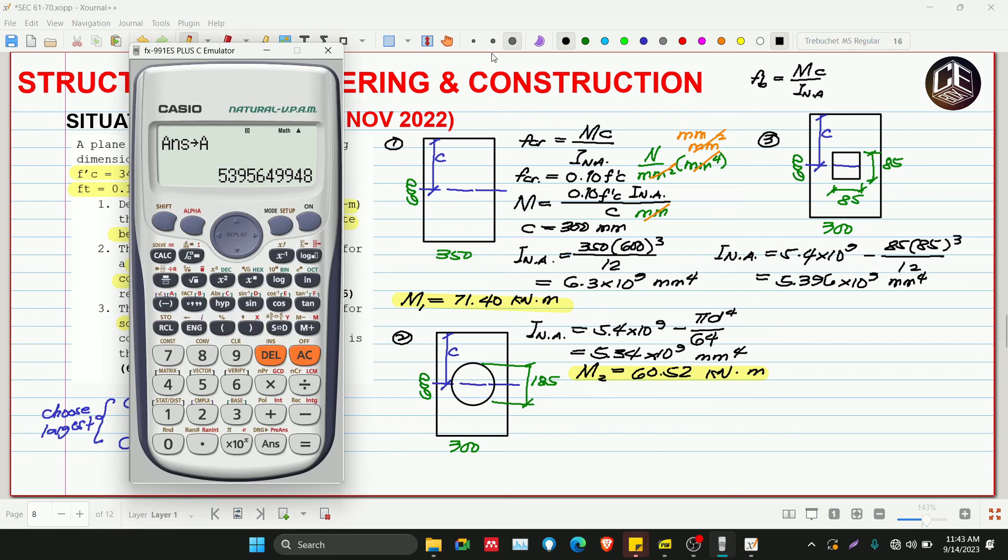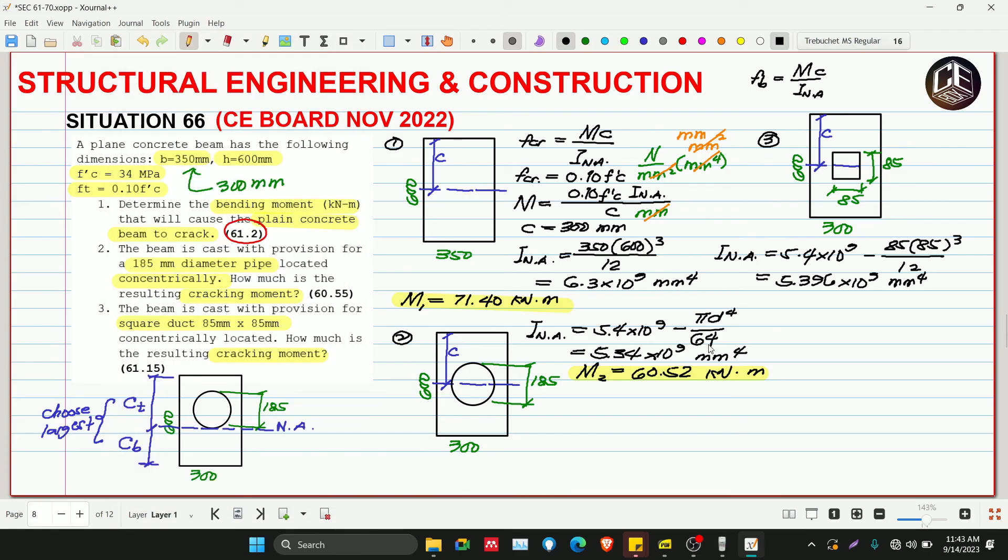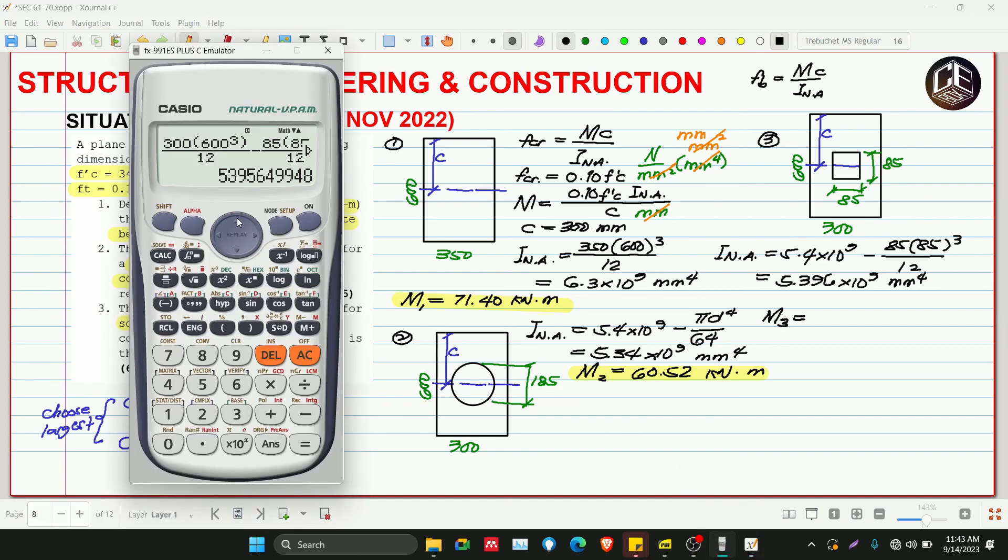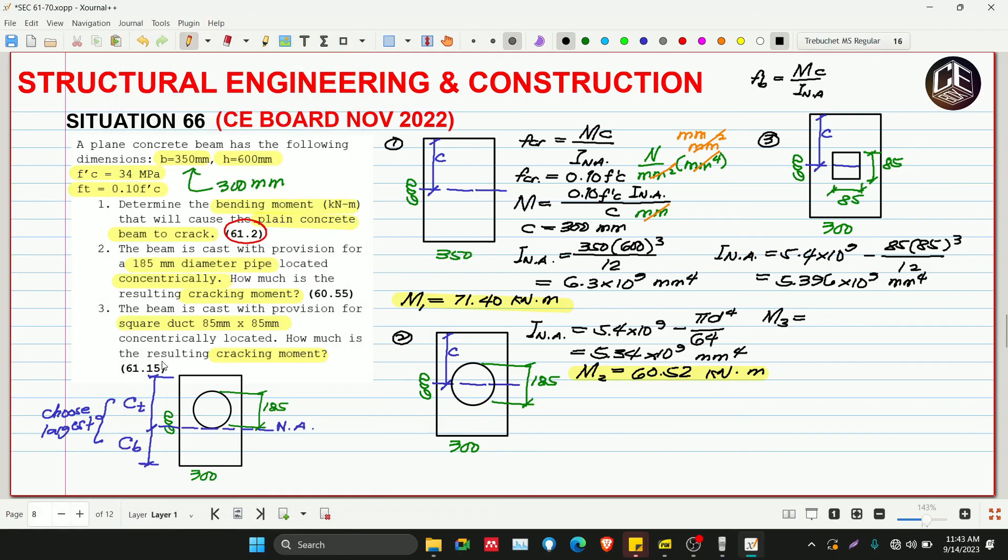M3 is equivalent to point 10 times F prime C multiplied by A divided by C and 1000 squared. The answer is 61.15 kilonewton meter.